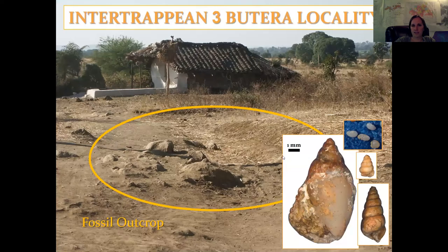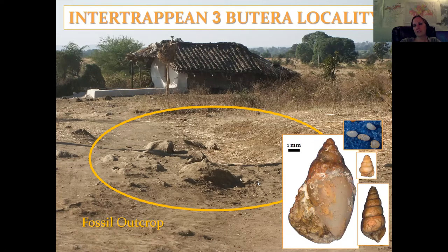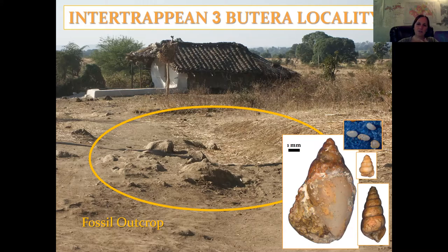Finally, an Intertrapian 3 locality. This is the only outcrop we've really found of that — a historical locality described by Hislop in 1860. I think they built over it, so this is all we have of the specimens. We do have some ostracods and some snails, but interestingly the snails got bigger. I started reading about something called the Lilliput Effect: after a major mass extinction or major trauma, sometimes animals and flora will be dwarfed. I think that's what happened with the Intertrapian 1 and 2 localities — so much trauma from the initial basalt flows that they shrank. These are adults, not baby snails — definitely adult snails. But by Intertrapian 3 they start to recover, and the diversity didn't really change much.